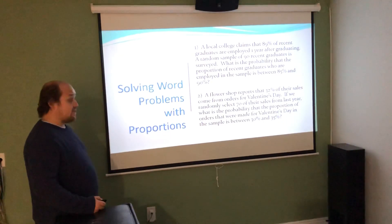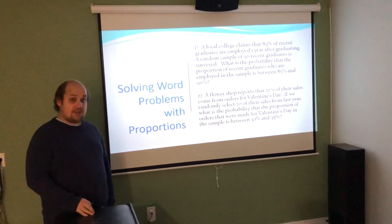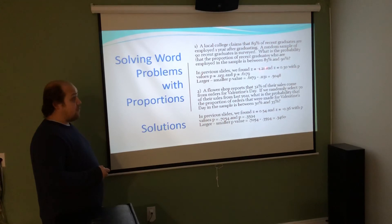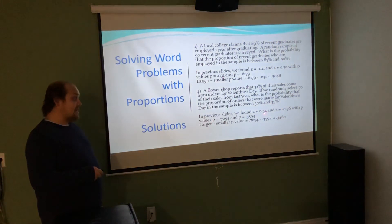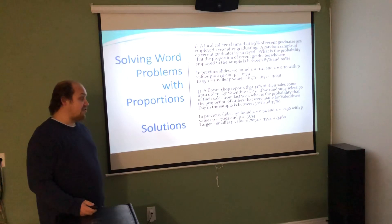The last type are asking between questions for the two things we already found in previous slides. We're going to look at the z-scores that we had and the p values associated with them, then do larger p value minus smaller. For the college claim, we previously found negative 1.21 and 0.30, which pointed to 0.1131 and 0.6179. Larger minus smaller gives us our between answer of 0.5048. For number two, we previously found z of 0.54 and negative 0.36. The associated p values are 0.7054 and 0.3594. When I subtract them, larger minus smaller gives me a final answer of 0.3460.